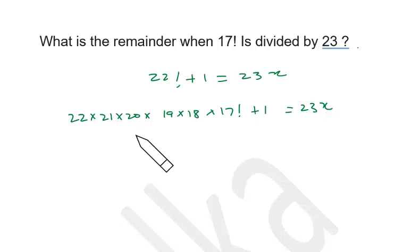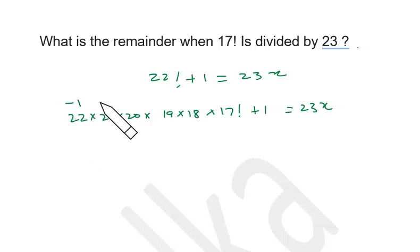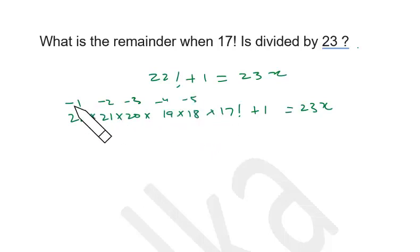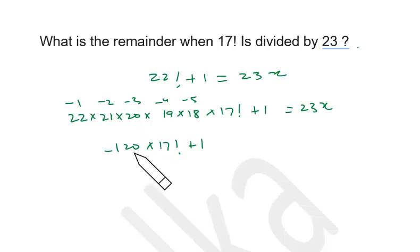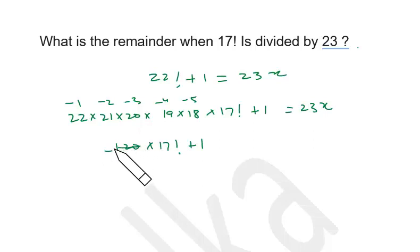We can reduce further by taking out as many 23's as we can: minus 1, minus 2, minus 3, minus 4, minus 5 — basically 5 factorial, which is 120. Precisely, 23 into 5 is 115, so 115 can be taken out, leaving minus 5.